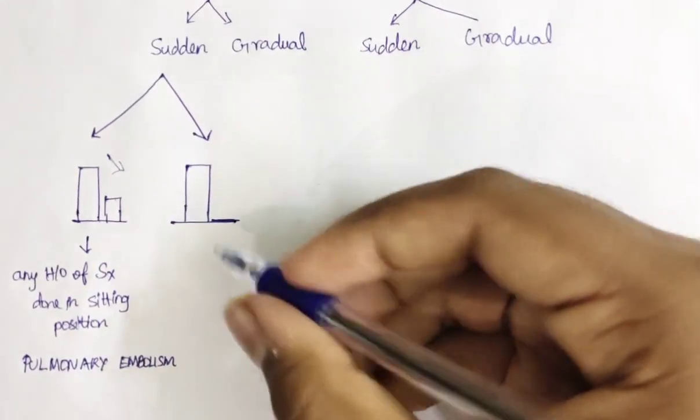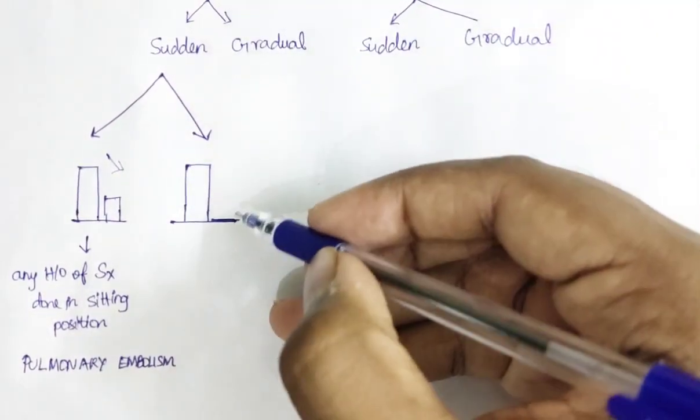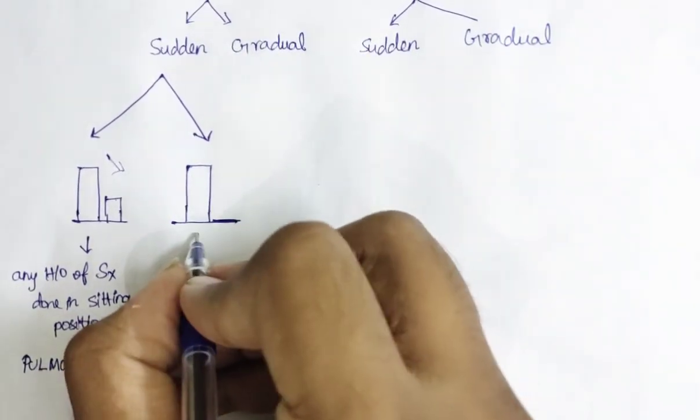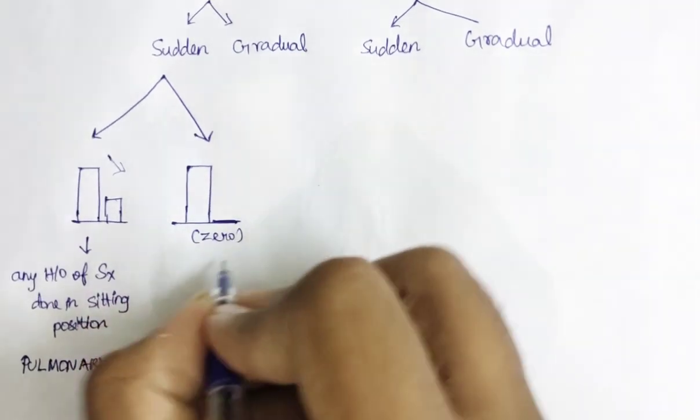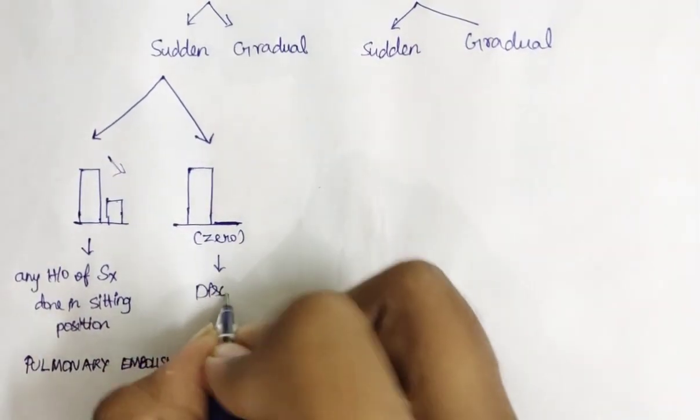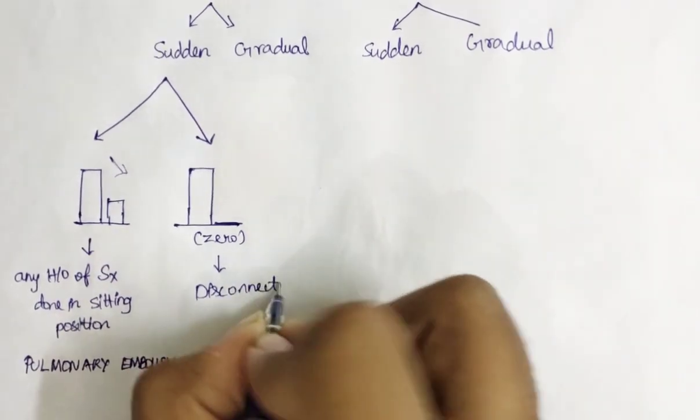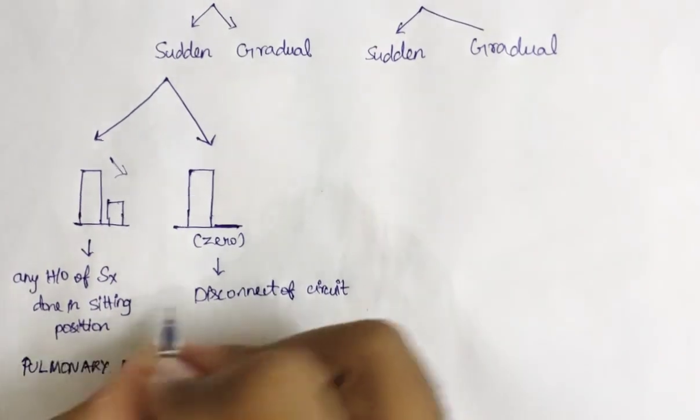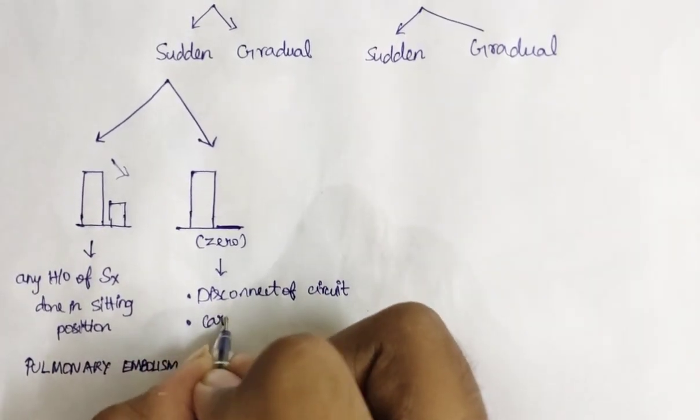What will be the answer for when it suddenly drops to zero? When EtCO2 suddenly drops to zero, there is disconnection of the circuit if there is a sudden disconnection, or there can be a possibility of sudden cardiac arrest.